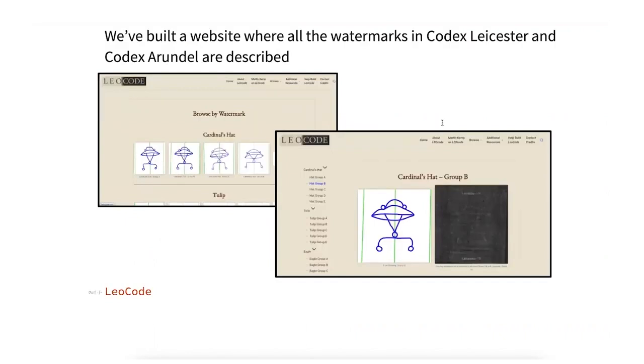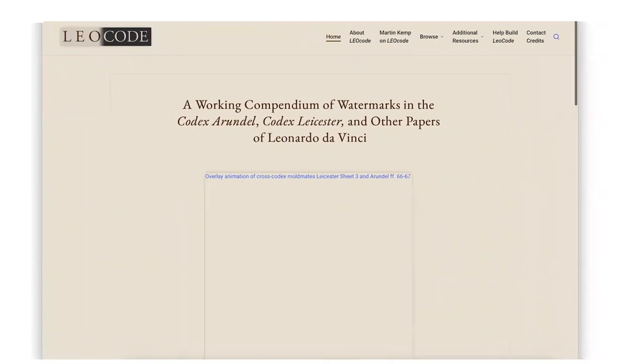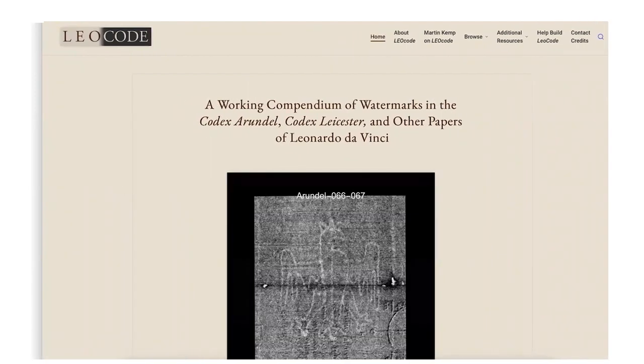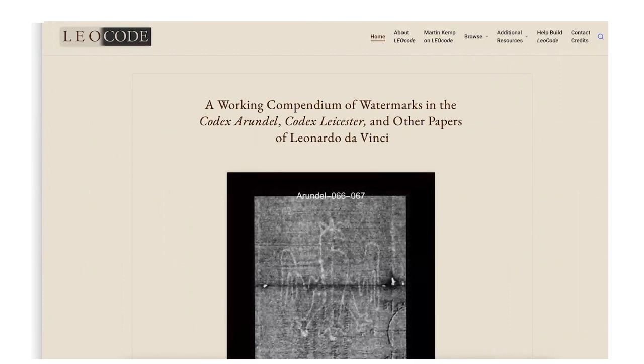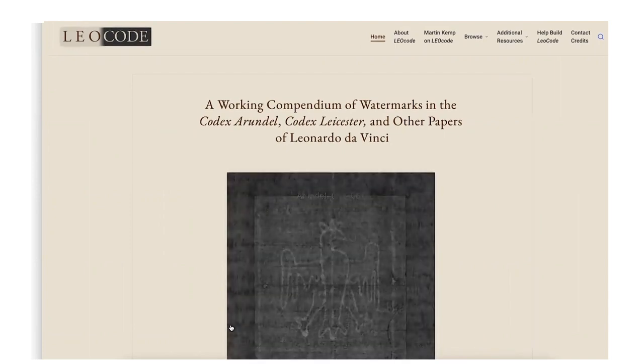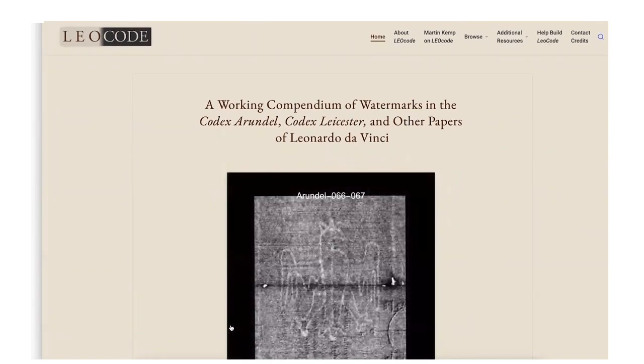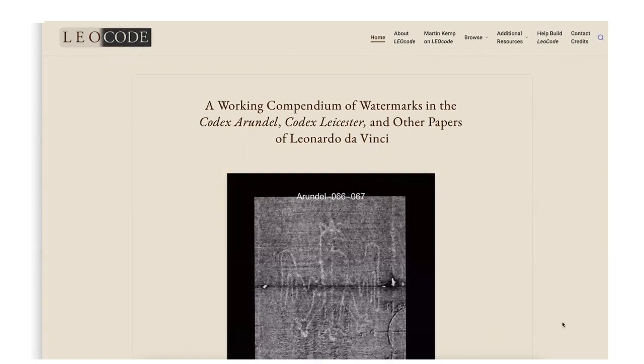So here's a place, if this stuff interests you, we've created this website called LeoCode, because we're coding up the codices of Leonardo. And if you go to this website, you can see it's leocode.org. And what you see is, here's all the information we have so far about the Arendelle and the Leicester Codex. We'll be putting up the Madrid information as soon as we get permission to do so. What you're seeing here in this video is we are essentially morphing between Arendelle 66, 67, and this is what we call an overlay video.